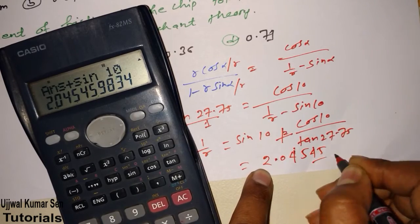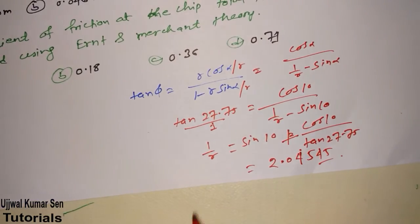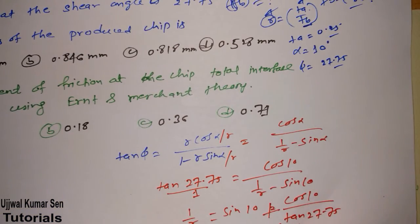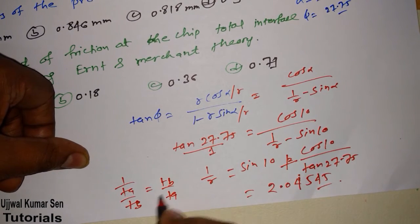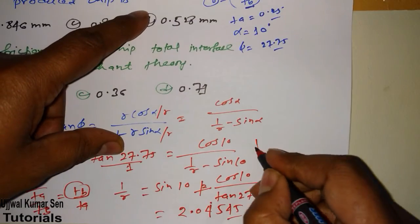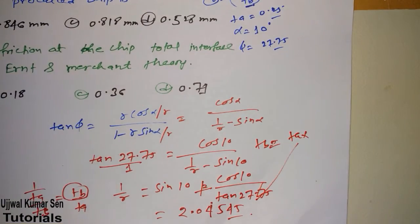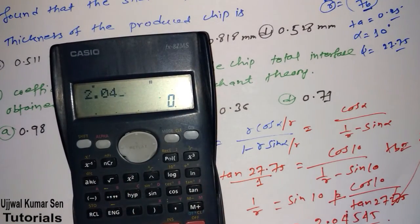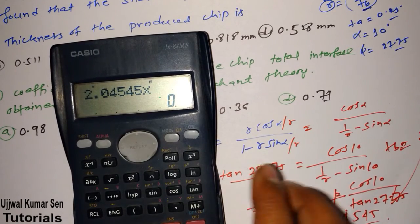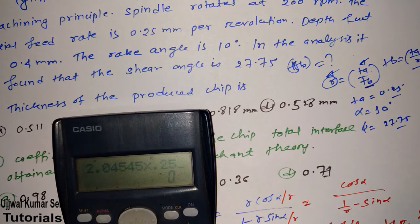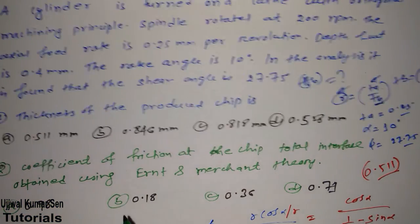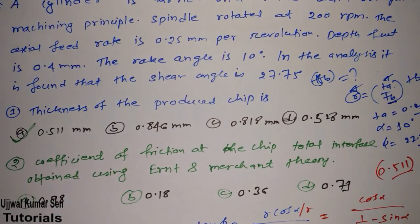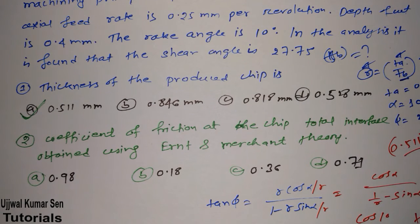Since 1/r = t_b / t_a, we get t_b = t_a × 2.04545. With t_a = 0.25 mm, the chip thickness t_b = 0.25 × 2.04545 ≈ 0.511 mm. So the first option, 0.511 mm, is the correct answer for the chip thickness.